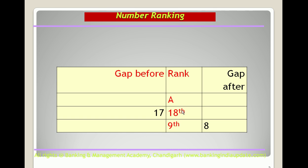Let us see the first question. A has an 18th rank from the front — it means 17 people are before him. If the rank of A is 9th from the other end, it means 8 people are after him. We need to find how many total persons there are: 17 before, plus A, plus 8 after.